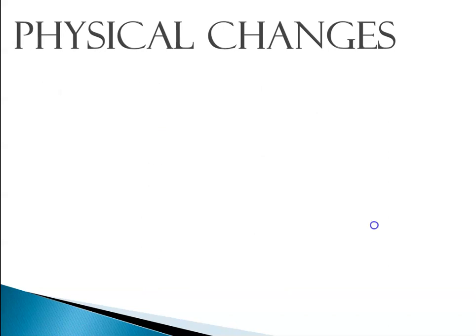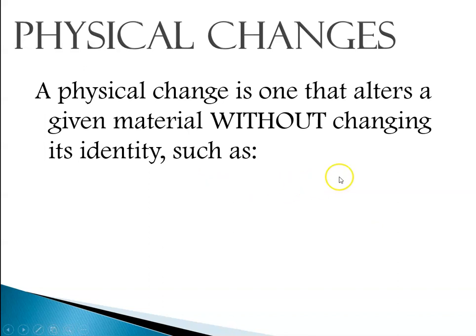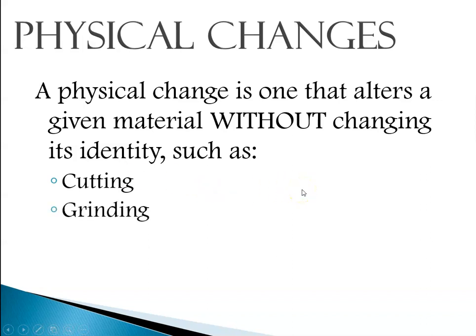So then we talk about a physical change. A physical change is one that alters the material without changing its identity. For example, if I have an ice cube and it melts, it goes from being water in its solid state to being water in its liquid state — the identity didn't change. Also cutting: if I take a piece of paper and cut it in half, it's still paper. If I take a sugar cube and grind it down to a powder, it's still sugar. If I take a piece of copper wire and bend it, I have not changed its identity.